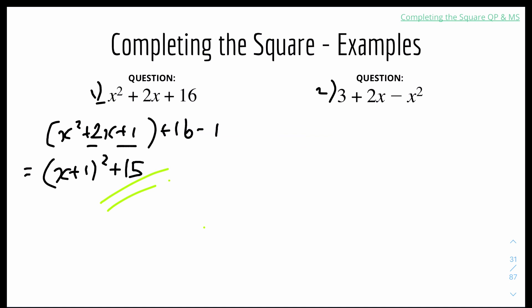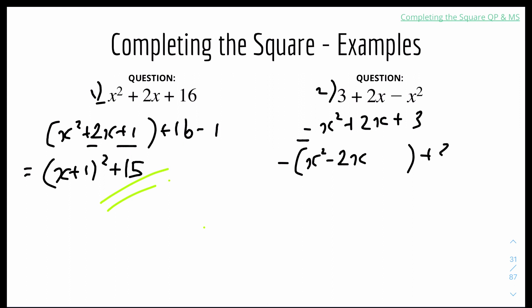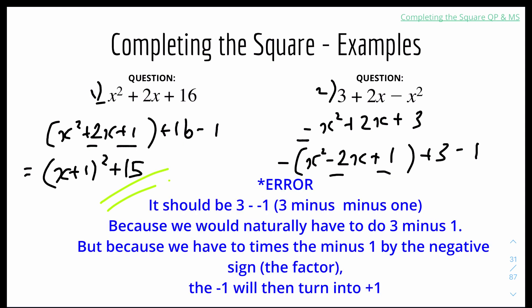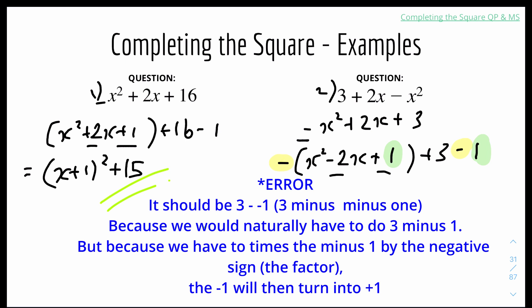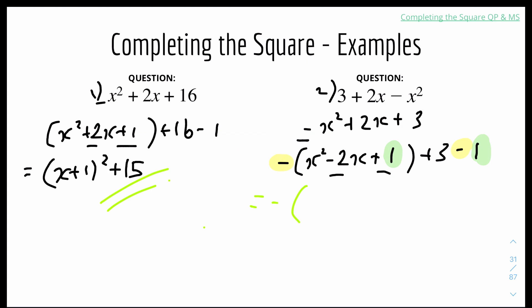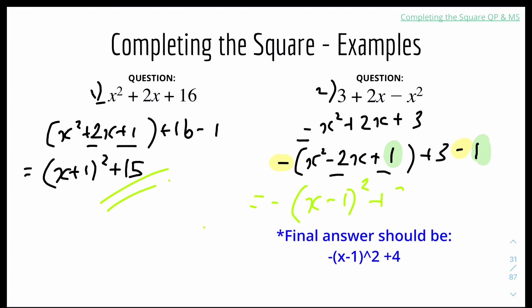Example 2: 3 + 2x − x². Rearrange to −x² + 2x + 3. The a coefficient is −1, so factorise out the negative: −(x² − 2x) + 3. The new c coefficient is (−2 ÷ 2)² = (−1)² = 1. Plus 1 inside, so minus 1 × (−1) = minus 1 on the outside — but since the factor is negative, it becomes −(−1) = +1 outside. Simplify: −(x − 1)² + 3 + 1 = −(x − 1)² + 4. Wait — 3 minus 1 gives 2... final answer: −(x − 1)² + 2.